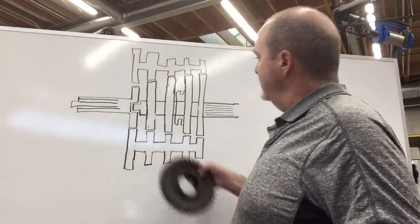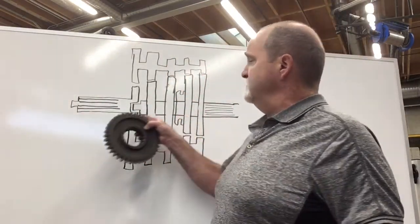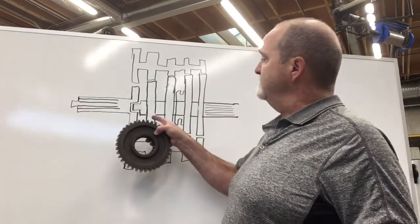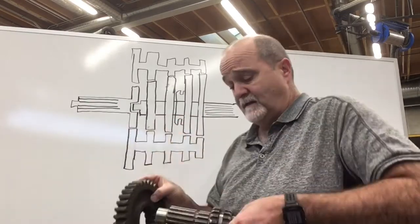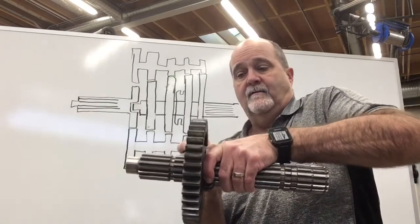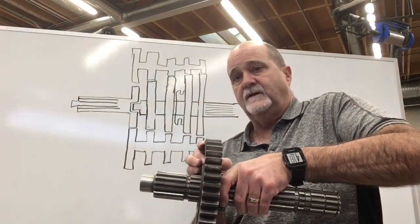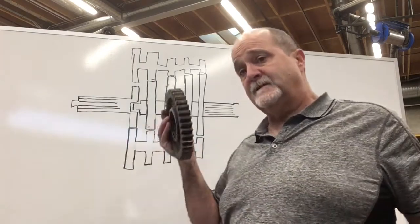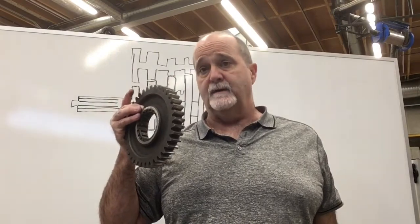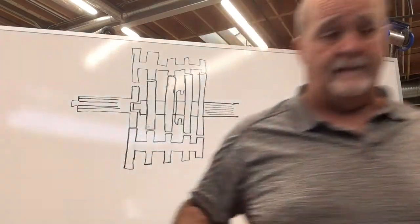So we never want all of these gears to be meshing at the same time. These gears should be meshing with this and then that locks that gear in until we're ready to shift and make another gear. Each one of these are going to be a different size, which will allow us to have different ratios at the output of the transmission.